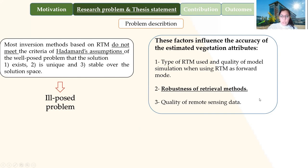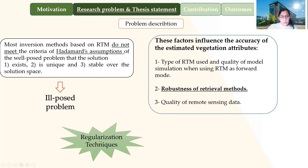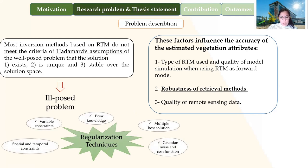We have three factors: the type of radiative transfer model, the robustness of the retrieval method, and the quality of radiometric data. To increase the robustness of retrieval methods, different regularization techniques have been proposed, including prior knowledge, multiple best solutions, Gaussian lines, and variable constraints, especially the temporal constraint. Most of these techniques have been applied in my PhD research. If these techniques mitigate the robustness problem, they will consequently increase the accuracy of estimates.